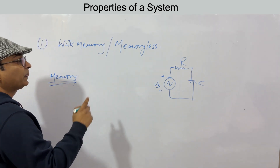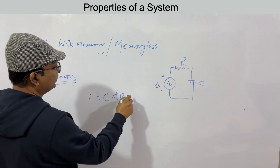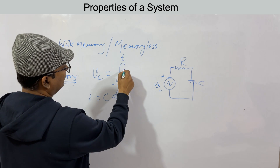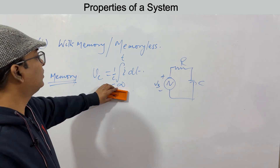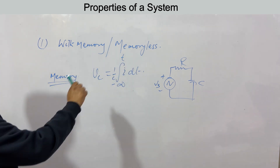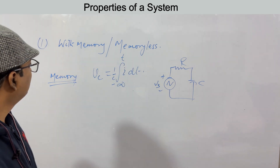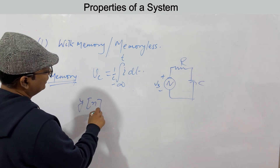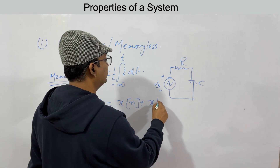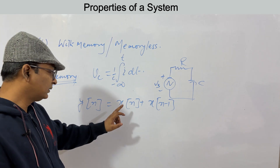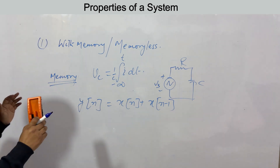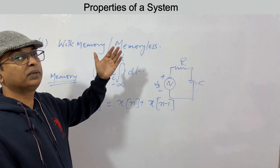In the RC circuit, Vc equals (1/C)·∫from −∞ to t of i·dt, so it depends on the current from minus infinity to t, not just the value at time t — this system has memory. Similarly, for a discrete system, if y[n] = x[n] + x[n−1], it depends on two signal values, so it has memory.